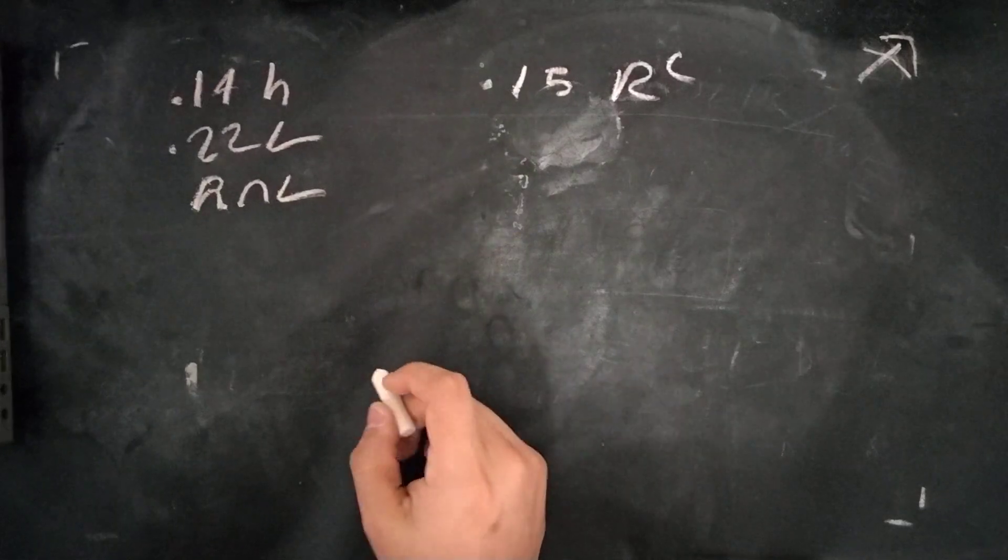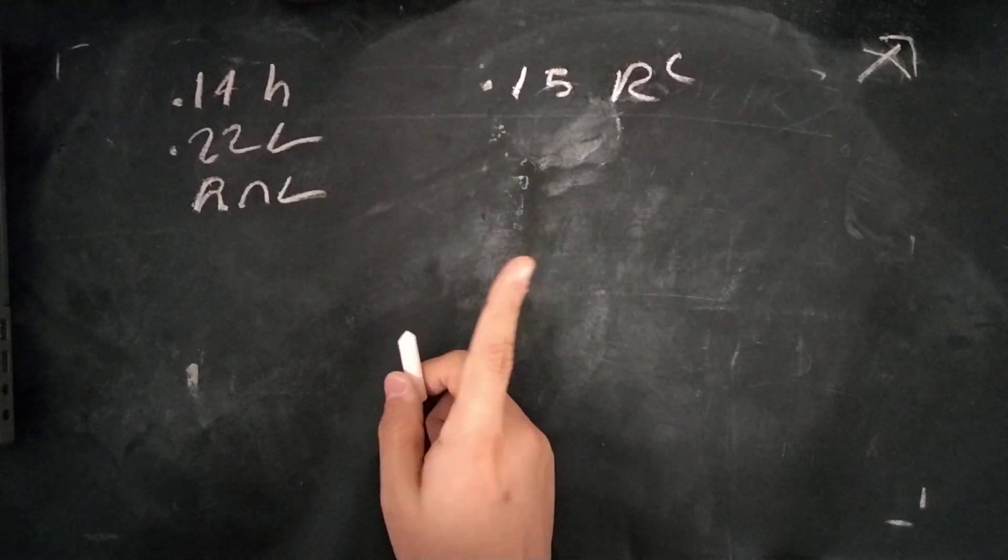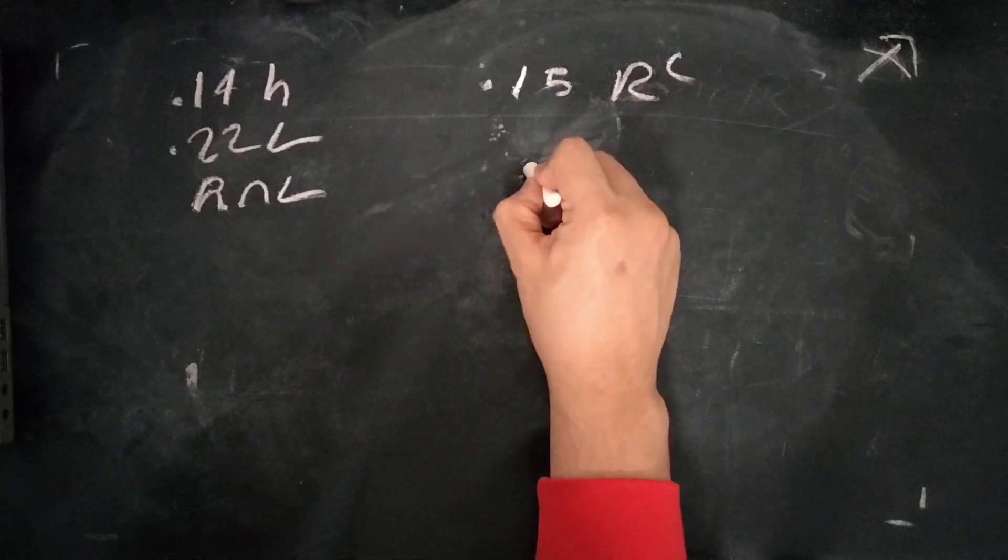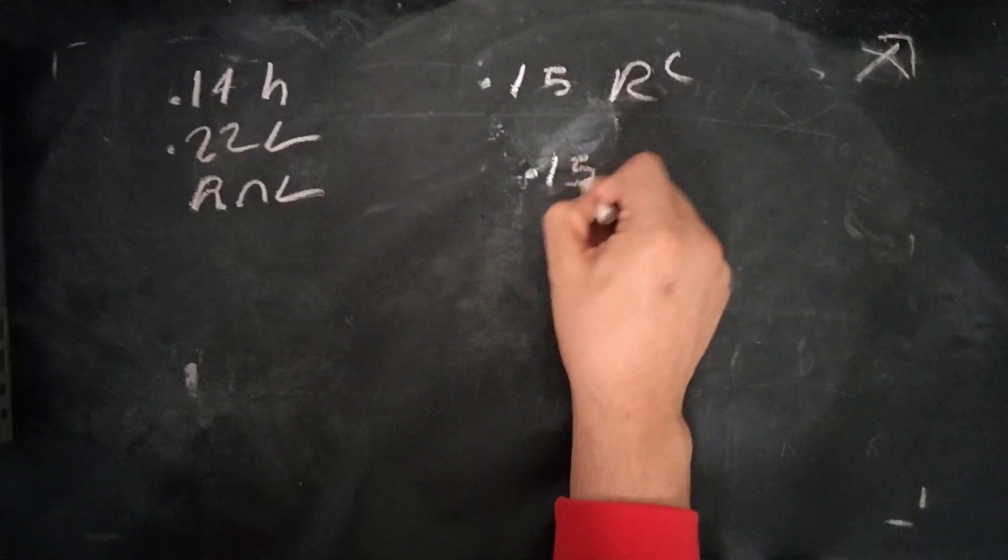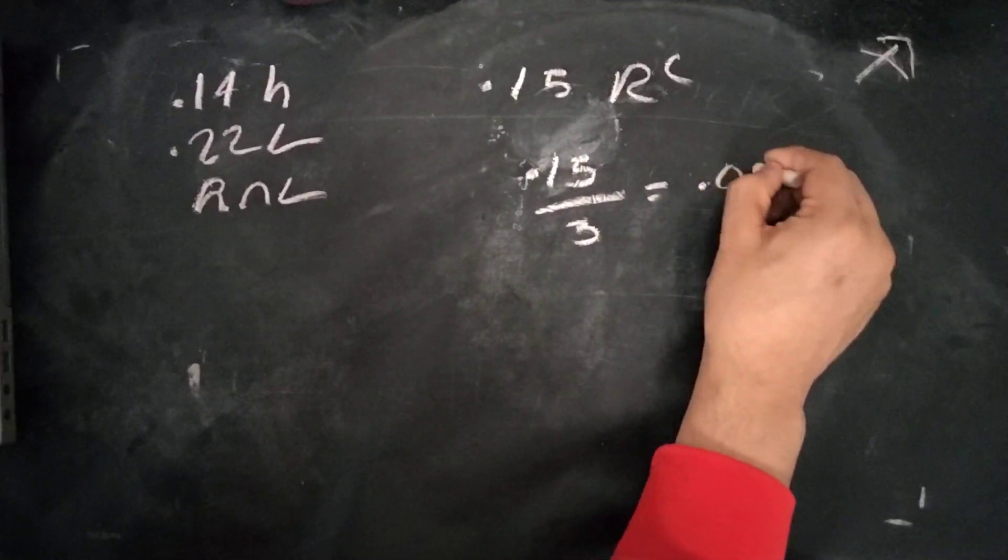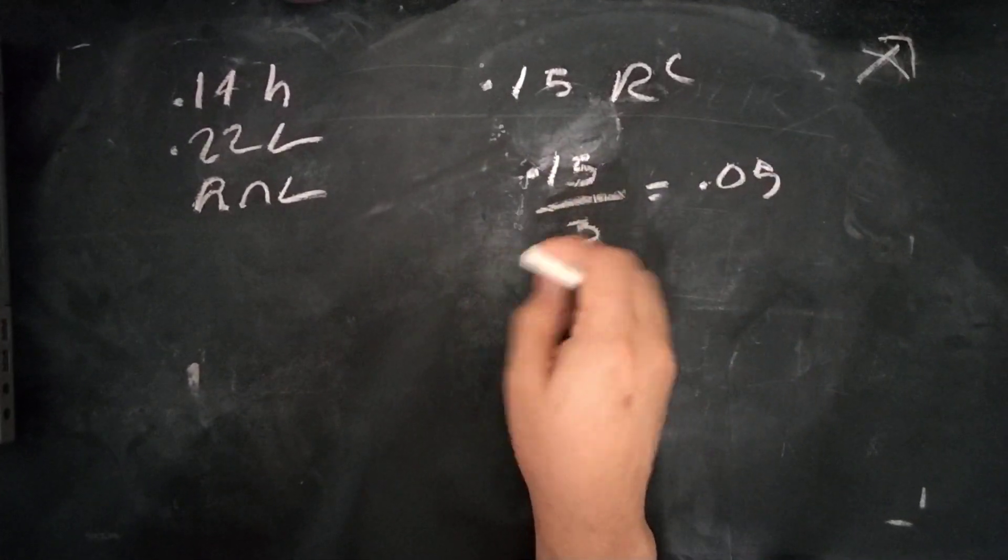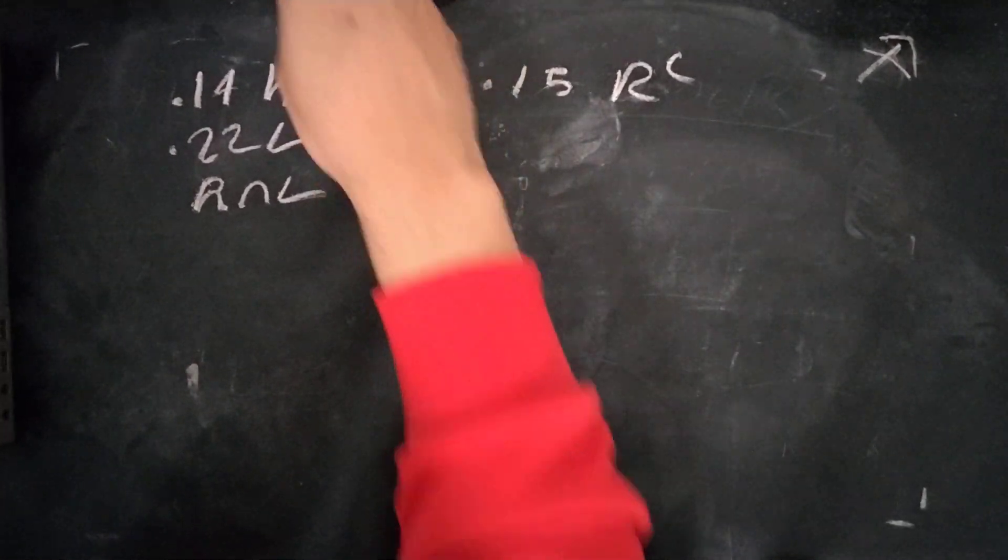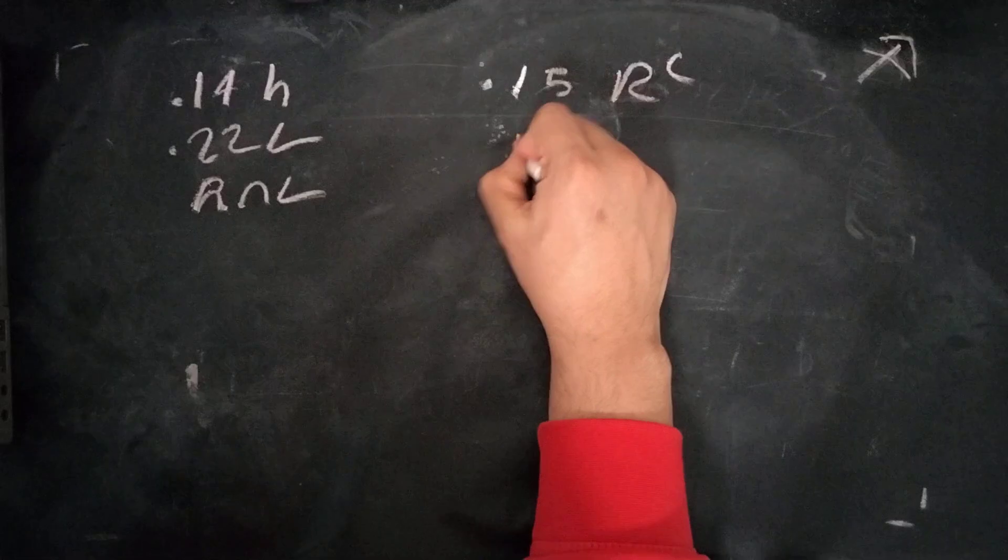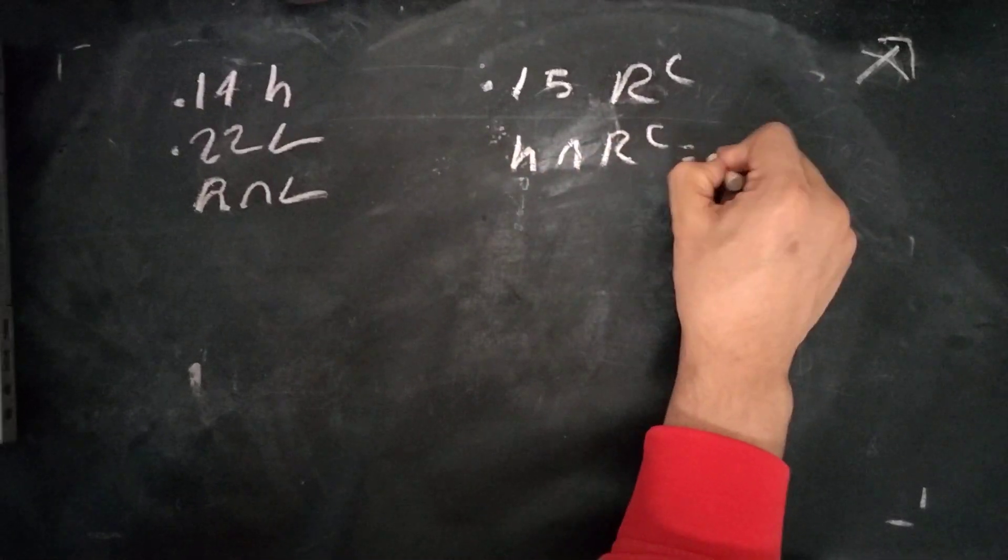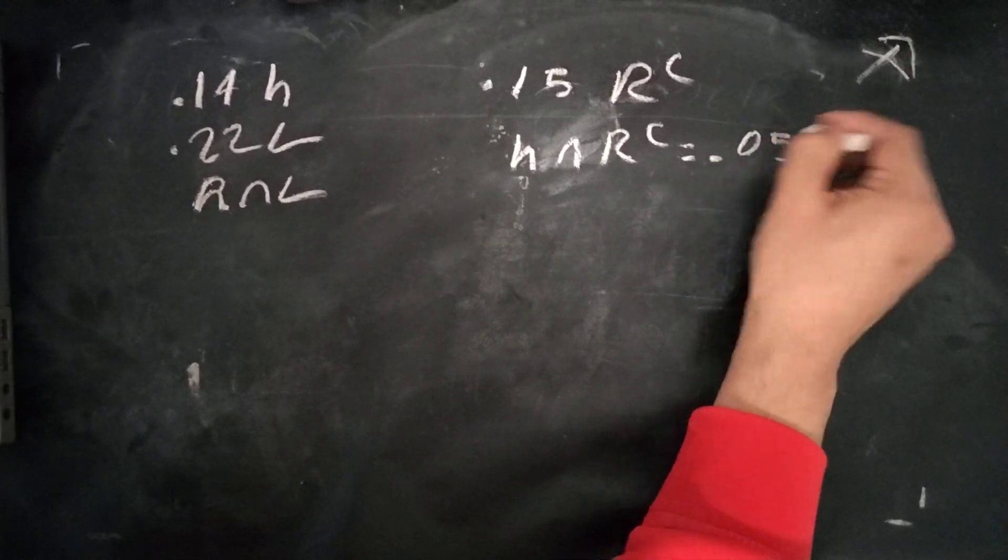So first off, we'll start with the fact that we know that of those with irregular heartbeats, one-third have high blood pressure. So we have 15%, and a third of that is 0.05. So we know that high blood pressure intersect irregular heartbeat is 0.05.